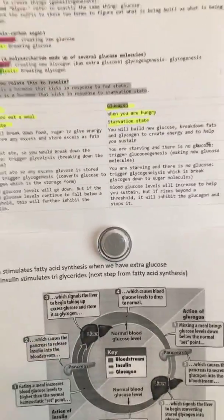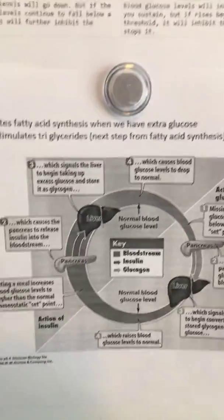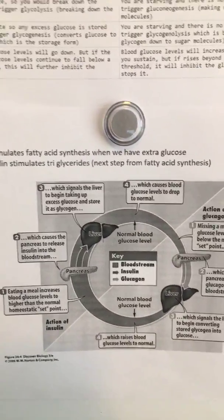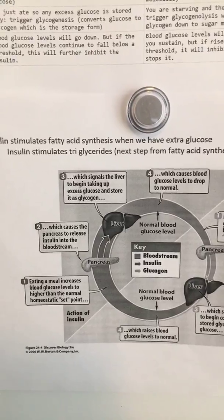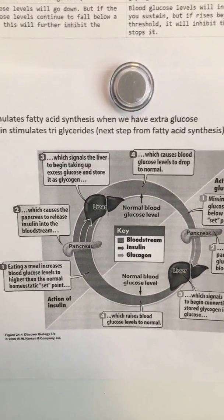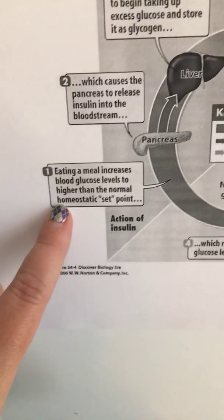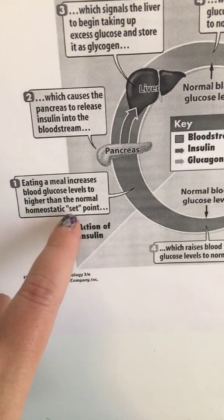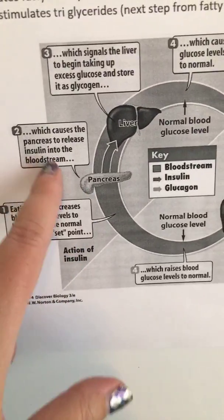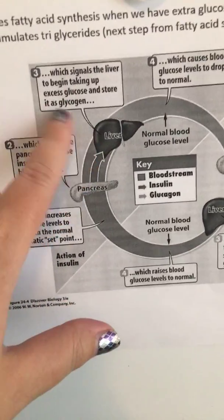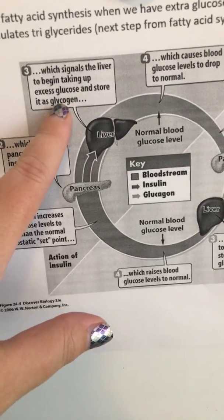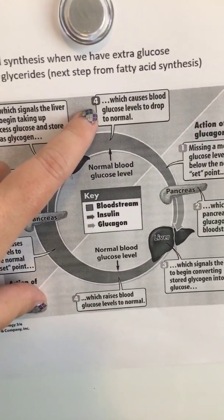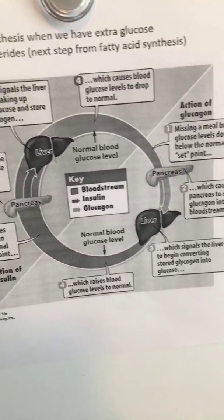So they're inverse. Insulin is going to stimulate fatty acid synthesis when we have extra glucose, and insulin is going to stimulate triglycerides. You eat a meal, increasing blood glucose levels higher than the normal homeostatic set point. This tells the pancreas to release insulin into the bloodstream, and then the liver begins taking up the excess glucose and stores it as glycogen.